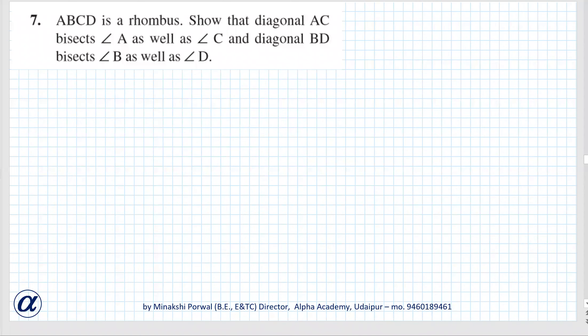Question 7, exercise 8.1. ABCD is a rhombus. Show that diagonal AC bisects angle A as well as angle C, and diagonal BD bisects angle B as well as angle D.